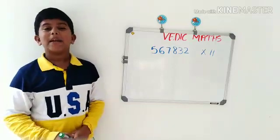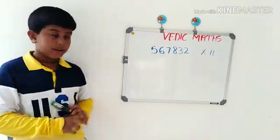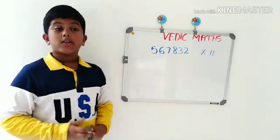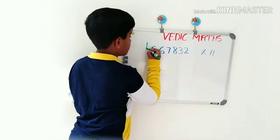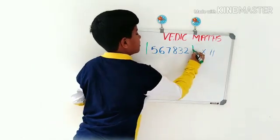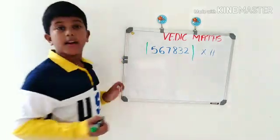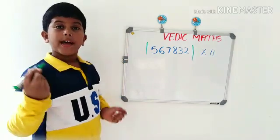Here we should draw two lines at both sides like this and put two zeros at both sides.